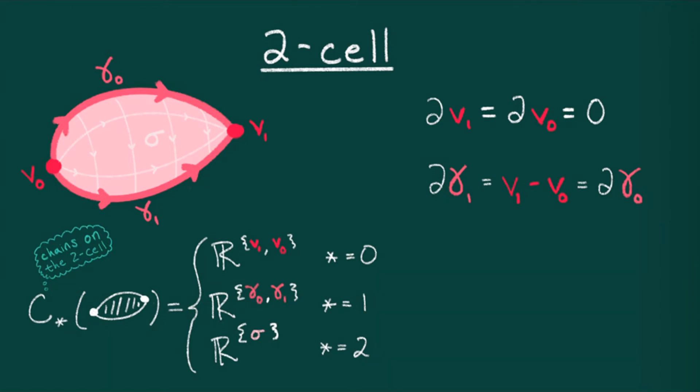Recall that a direction on an edge allows us to think of an edge as connecting one vertex to another. Similarly, we can think of a face as connecting one edge to another. In this case, sigma connects gamma zero to gamma one. Therefore, the boundary of sigma is gamma one minus gamma zero. And that's it. I've just defined for you a chain complex.